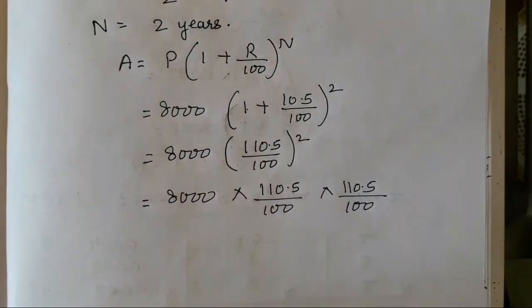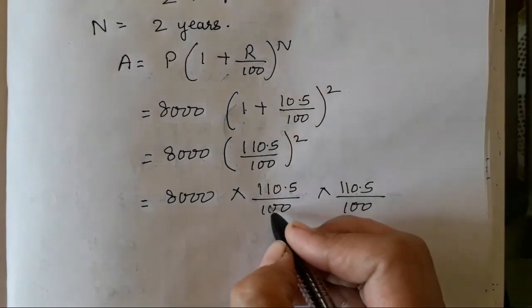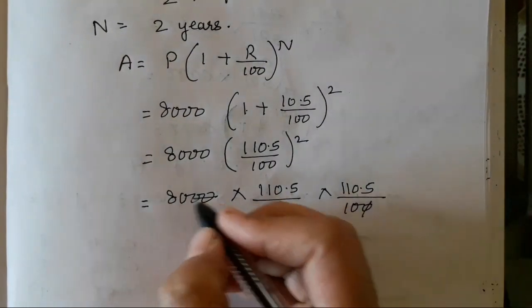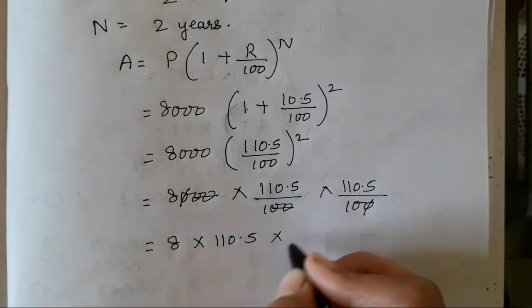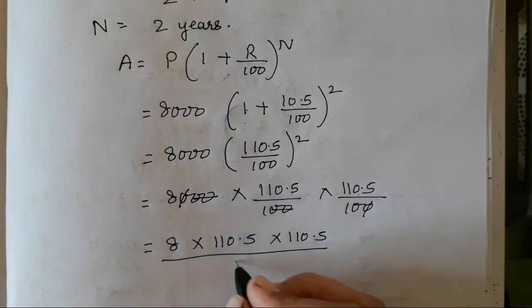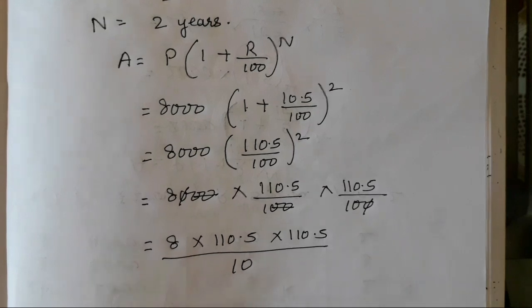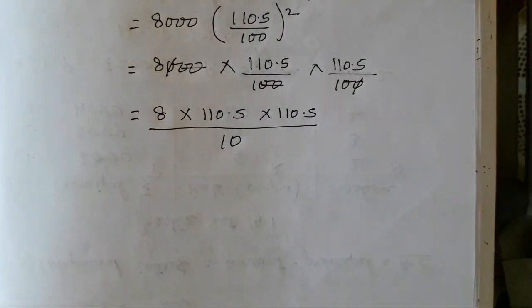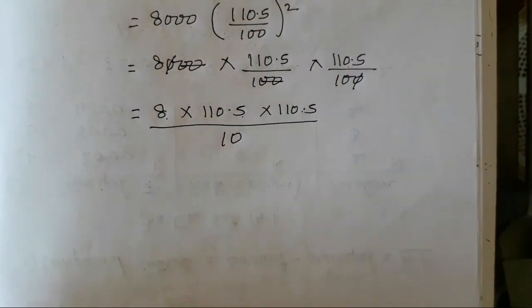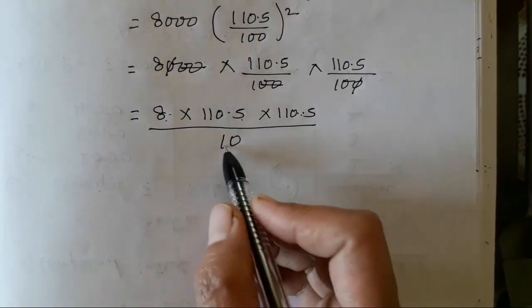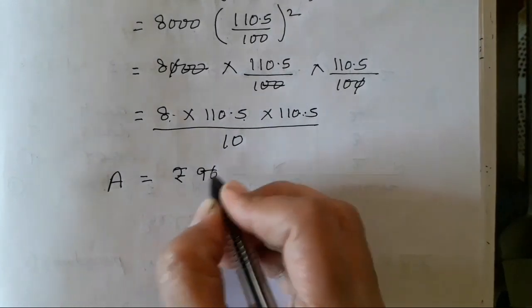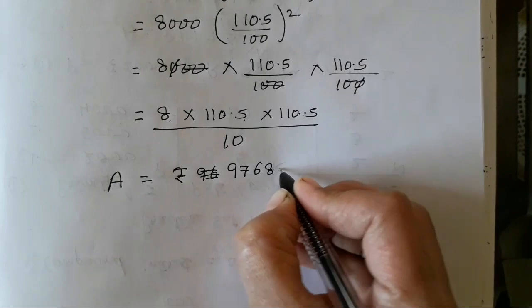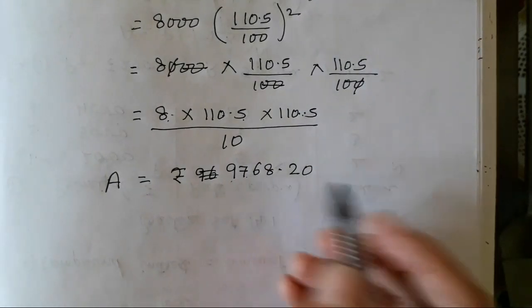Now after this what we are going to do is reduce the zeros: 2 zeros from here, 2 zeros from here, 1 zero from here and 1 from here. What is left now? 8 into 110.5 into 110.5 upon 10. As I said, we have to keep this 10 or 100 at the denominator's place in order to get the answer accurately. We can multiply them. Multiply all these numbers first and divide it with 10. You are going to get your A that is 9,768.20.